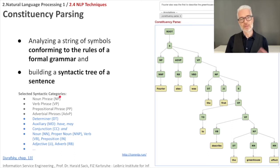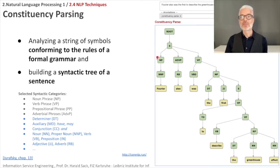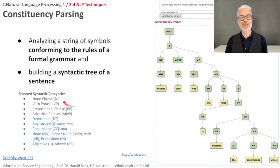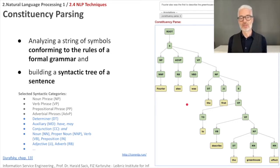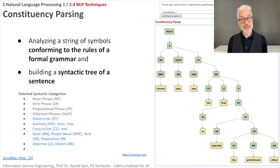In the constituency parse tree, you can see syntactic categories: for example, Fourier is not only a proper noun but an entire noun phrase. 'Was' forms a verb phrase, which contains another noun phrase — 'the first to do something' — and 'to describe the greenhouse effect' is again a verb phrase. These further broken-down syntactic categories help identify relationships between parts of the sentence: what comes first, what belongs together. This is constituency parsing.